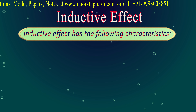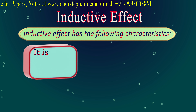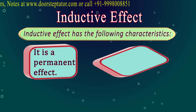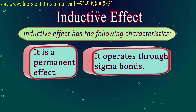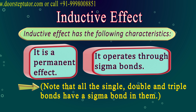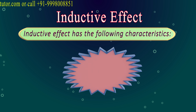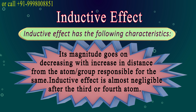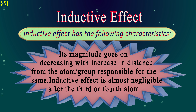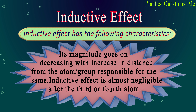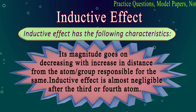The characteristics of inductive effect: first, it is a permanent effect, unlike the electromeric effect. Second, it operates through sigma bonds — remember every single, double, and triple bond contains a sigma bond. Third, its magnitude goes on decreasing with increasing distance from the atom or group responsible for it. The inductive effect is almost negligible after the third or fourth atom, as seen in chlorobutane where C3 and C4 showed very little electro-positive character.